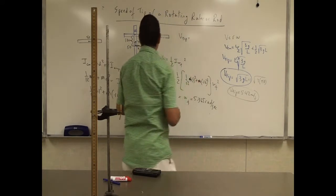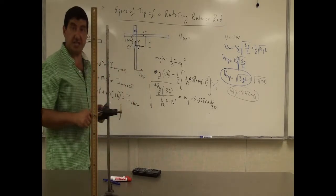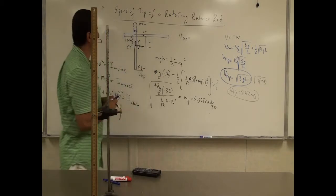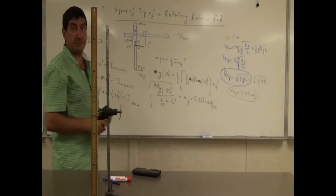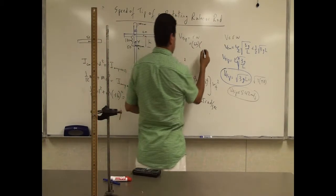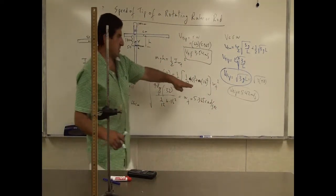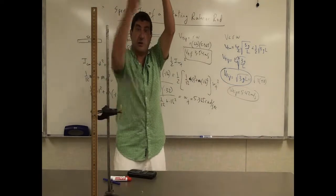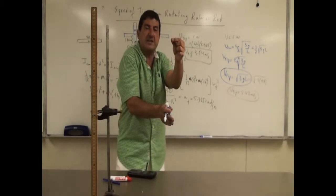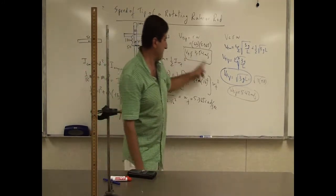The velocity of the tip for the 66 cm pivot is 0.66 times omega, giving approximately 3.54 m/s. This makes physical sense: when pivoted at the end, the tip is far from the pivot and moves faster. When pivoted at the 66 cm mark, the tip is closer to the pivot and moves slower. So our theoretical answers are 3.54 versus 5.42 m/s.